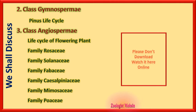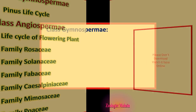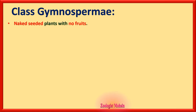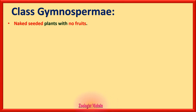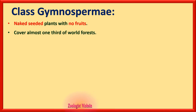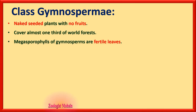Let's start: class Gymnospermia. Gymnosperms are naked-seeded plants — their seeds are not covered, they do not have fruits, and they do not have flowers; they are non-flowering plants. They cover almost one third of world forests, so the forests you see in pictures are almost gymnosperms.